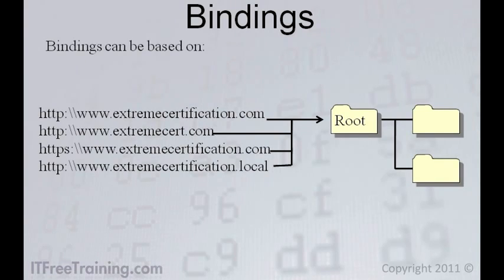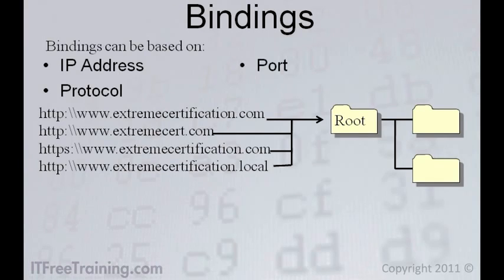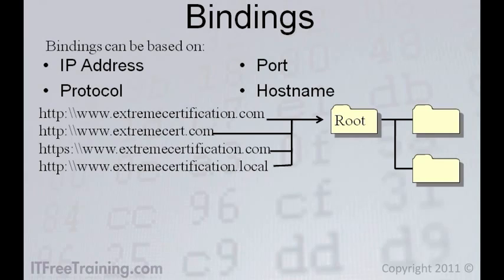Bindings can be configured on the IP address, protocol, port, and hostnames. It is possible to have two bindings with the same configuration. However, IIS will only allow one of these to be active at once.